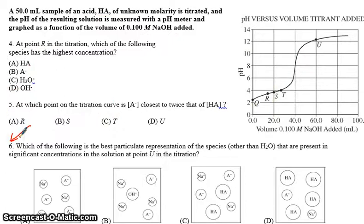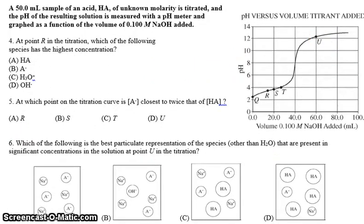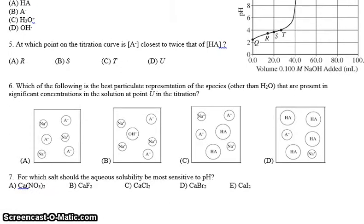Six says, which of the following is the best particulate representation of the species other than water that are present at significant concentrations at point U? Now, point U is when the titration is finished, essentially. So, all of our HA has been reacted. There is no more HA left. What we have left, though, is whatever it neutralizes into, which is A-. So, which of these best represents it? It looks like we have, so we shouldn't have any HA left, so this is out, because HA has been neutralized completely at the end of the neutralization, and this one is out. We shouldn't have any HA left.